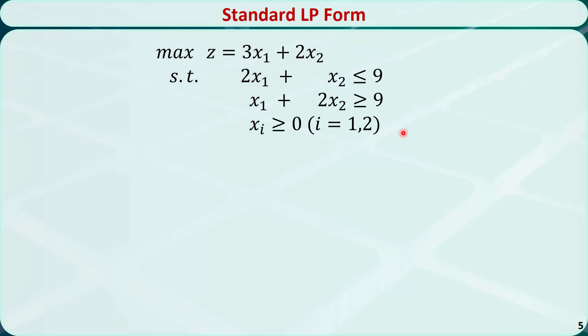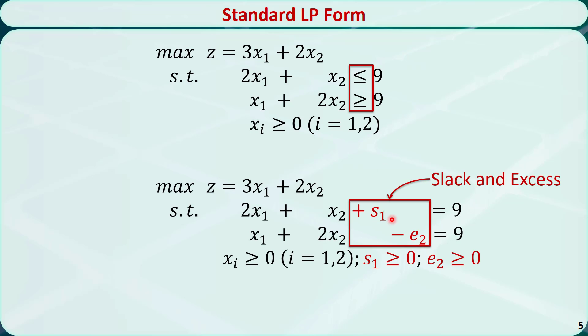What if we have a mixed case? One constraint has greater than or equal to sign, and the other has less than or equal to sign. In this case, we need to introduce both a slack variable and an excess variable to make them equality constraints.